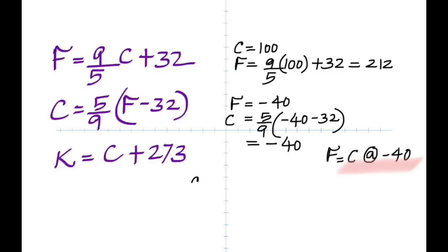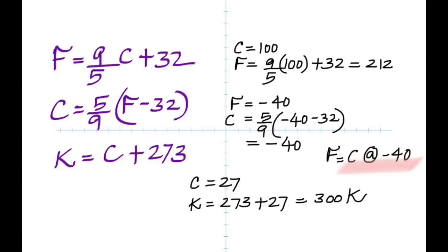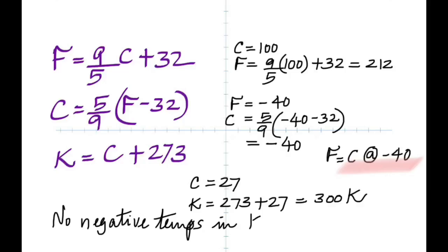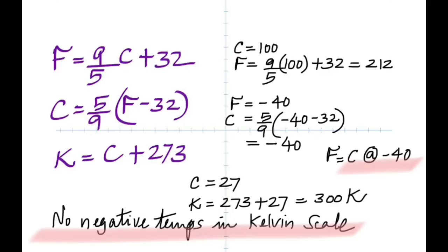On the Kelvin scale you have no negative temperatures, which is important. If you work out a problem and get minus 15 Kelvin, you know you're wrong. You cannot get a negative temperature in the Kelvin scale. To convert from Celsius to Kelvin, just add 273.